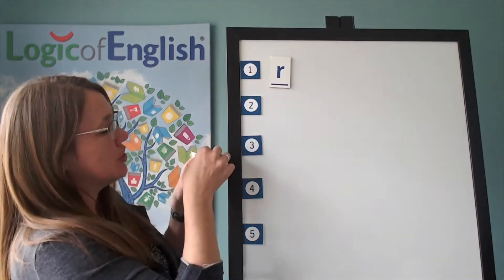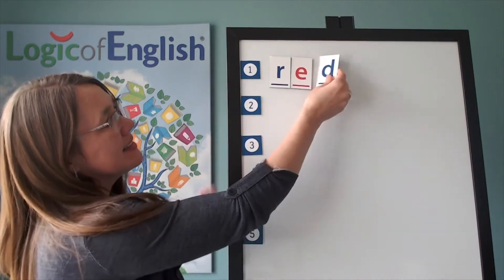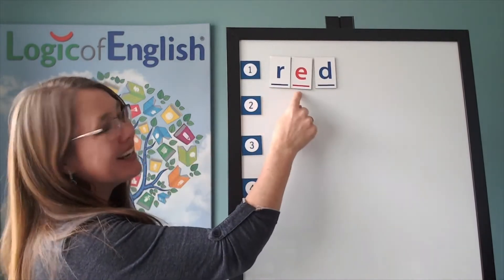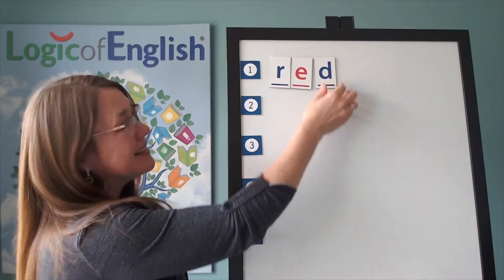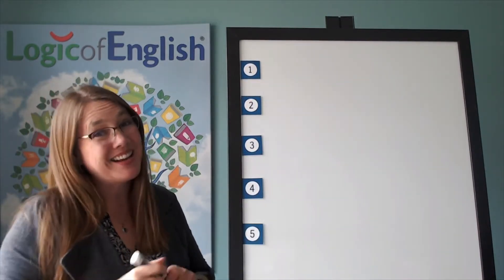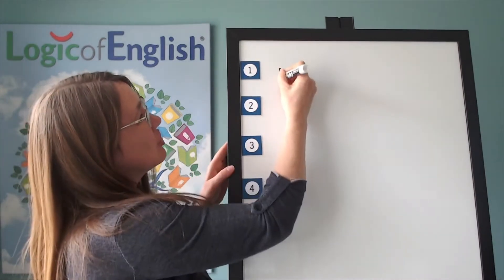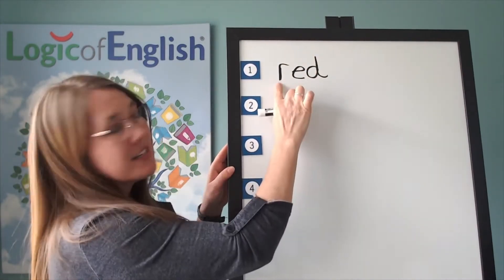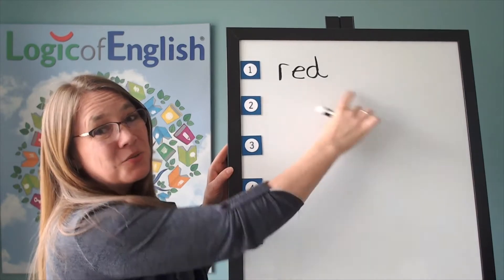Now help me. R-e-d. Let's read it. R-e-d. Red. Alright, sound it out again nice and loud so that I can hear you as I write it. R-e-d. Let's read it. R-e-d. Red.